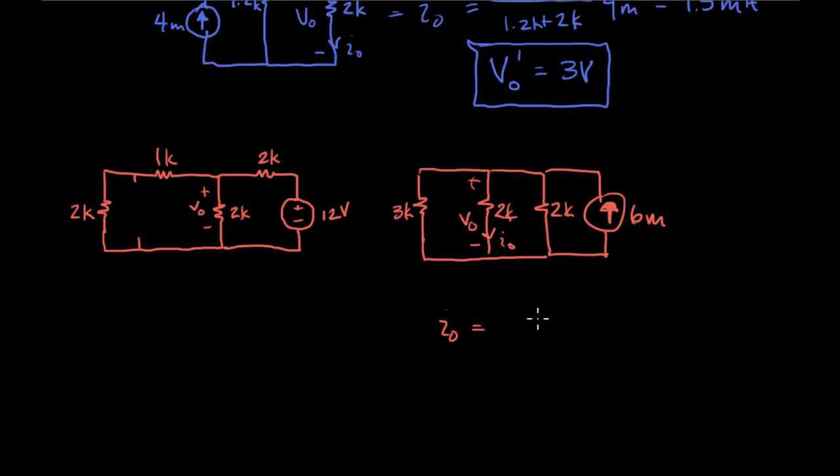And so I0 is going to equal, this is going to be 6 over 5, right? Over 2 plus 6 over 5 times 6, 6 milliamps. And when you calculate that out, you'll find that this is 9 fourths of a milliamp. And when you plug in your voltage, you'll find that the voltage equals 9 halves of a volt.